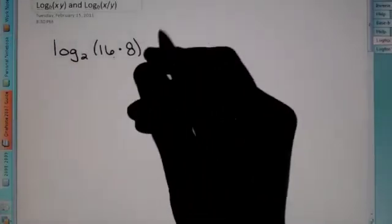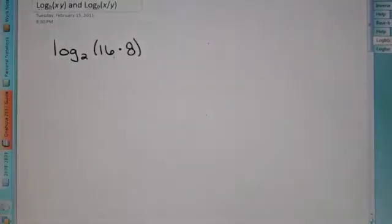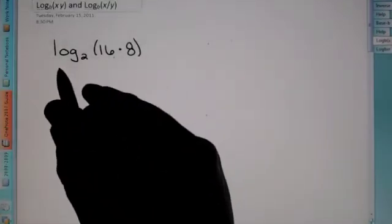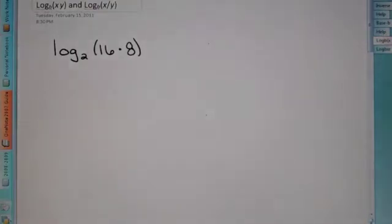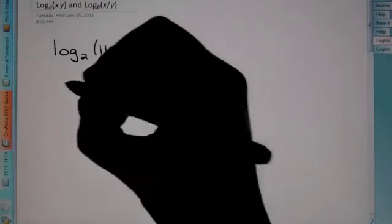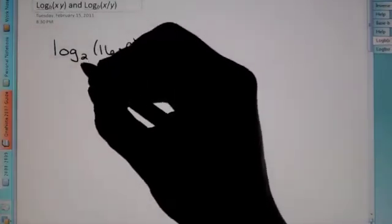We're going to go over a problem here to show a proof for what do you do when you have two terms being multiplied in front of a log. If we could rewrite, since we have a base of 2,